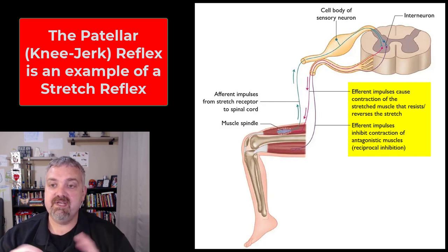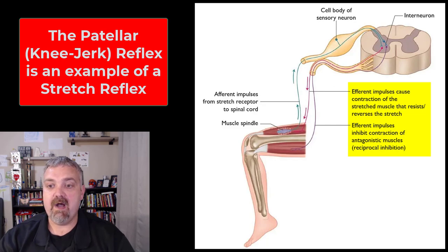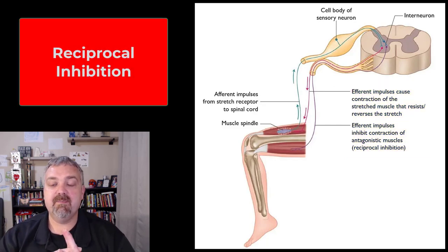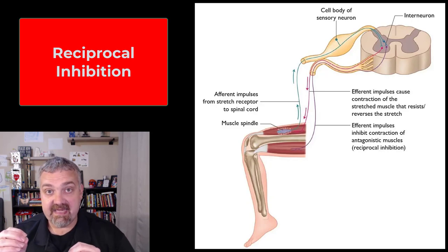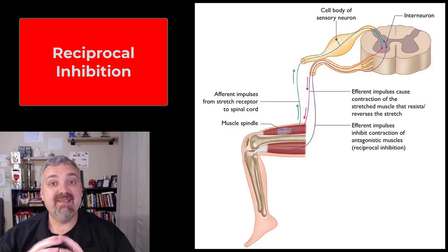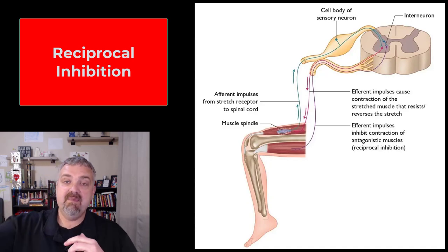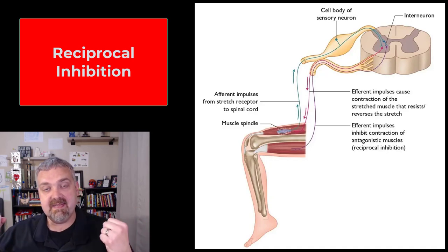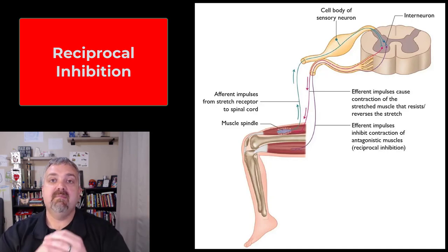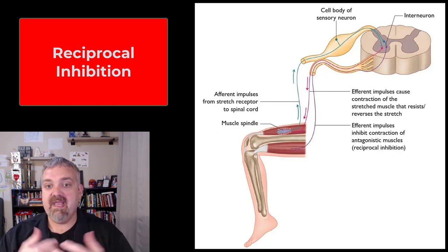There's an important term here: reciprocal inhibition. This is a very complex reflex because it's actually activating the agonist muscles to cause the quadriceps to shorten while at the same time inhibiting contractions of the knee flexors. For any movement to be smooth, you need the agonist prime movers to be stimulated while the opposing muscles, the antagonists, are inhibited — same thing with walking and everything else.